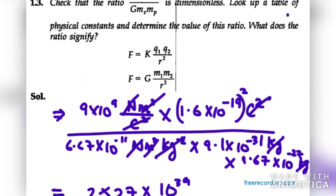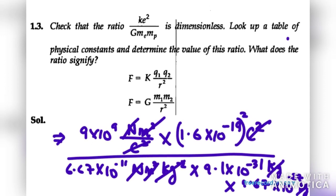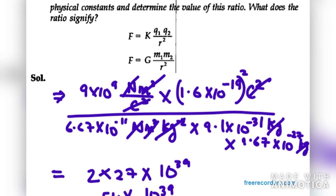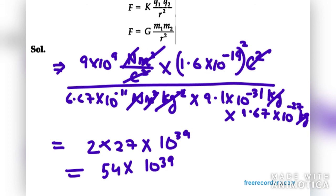And it says we need to tell what does this ratio signify. So you can say that it establishes that the electrostatic force is about 10 raised to power 39 times stronger than the gravitational force. So that's all for question number 13.